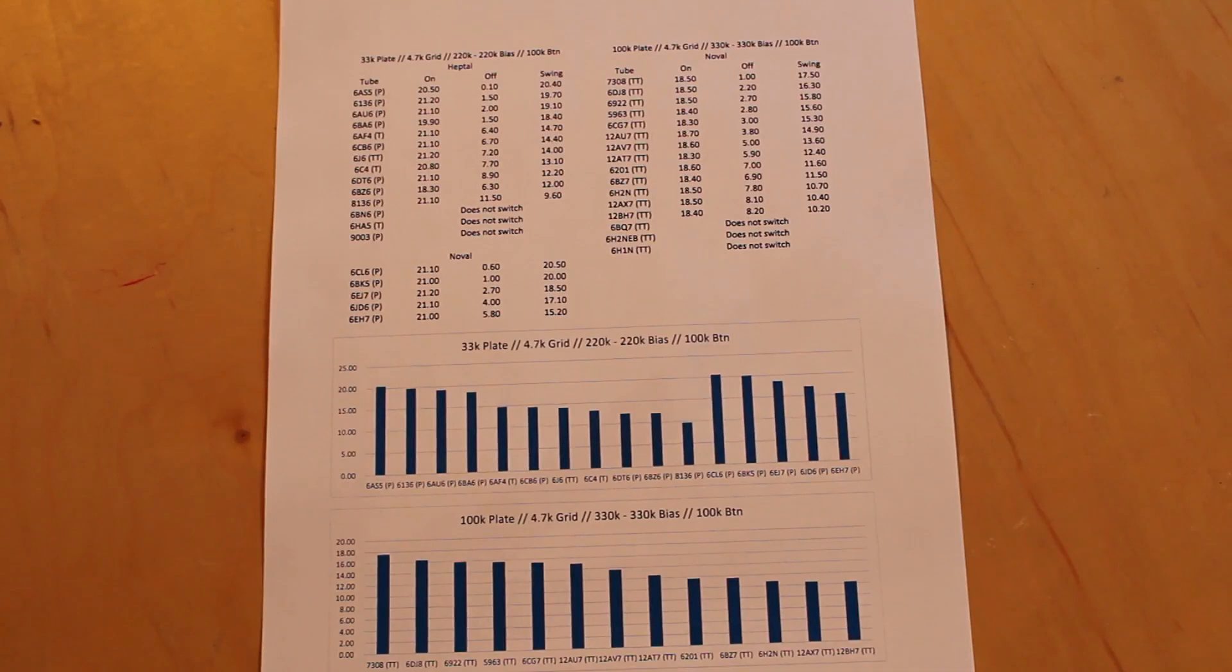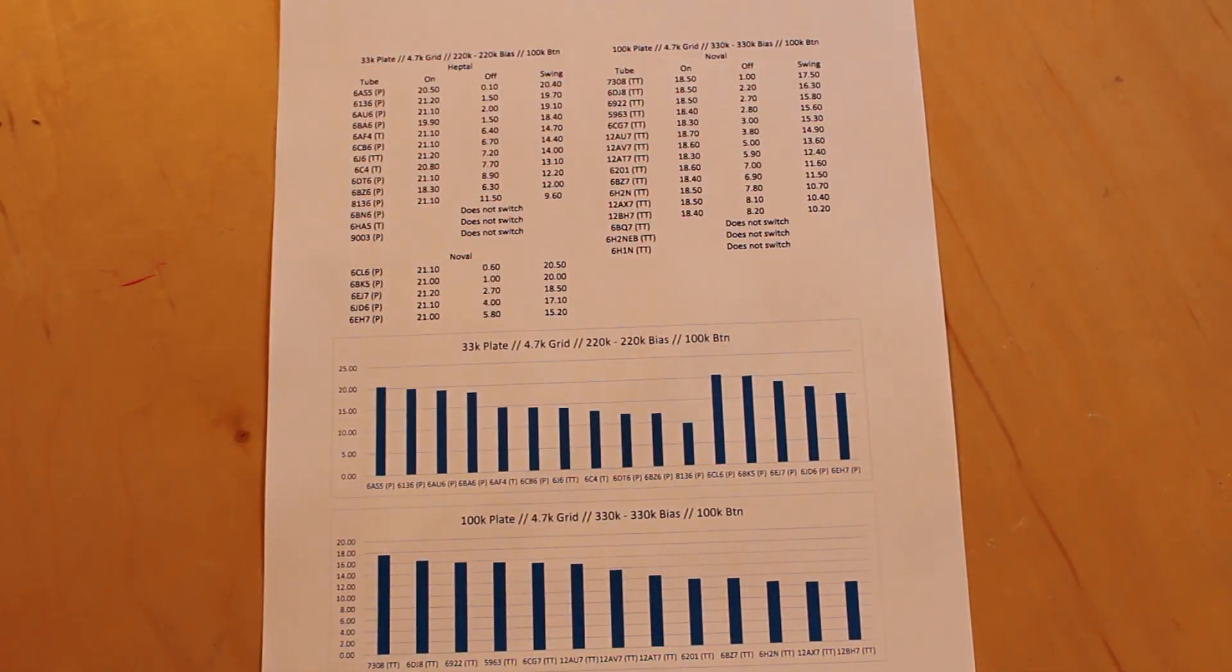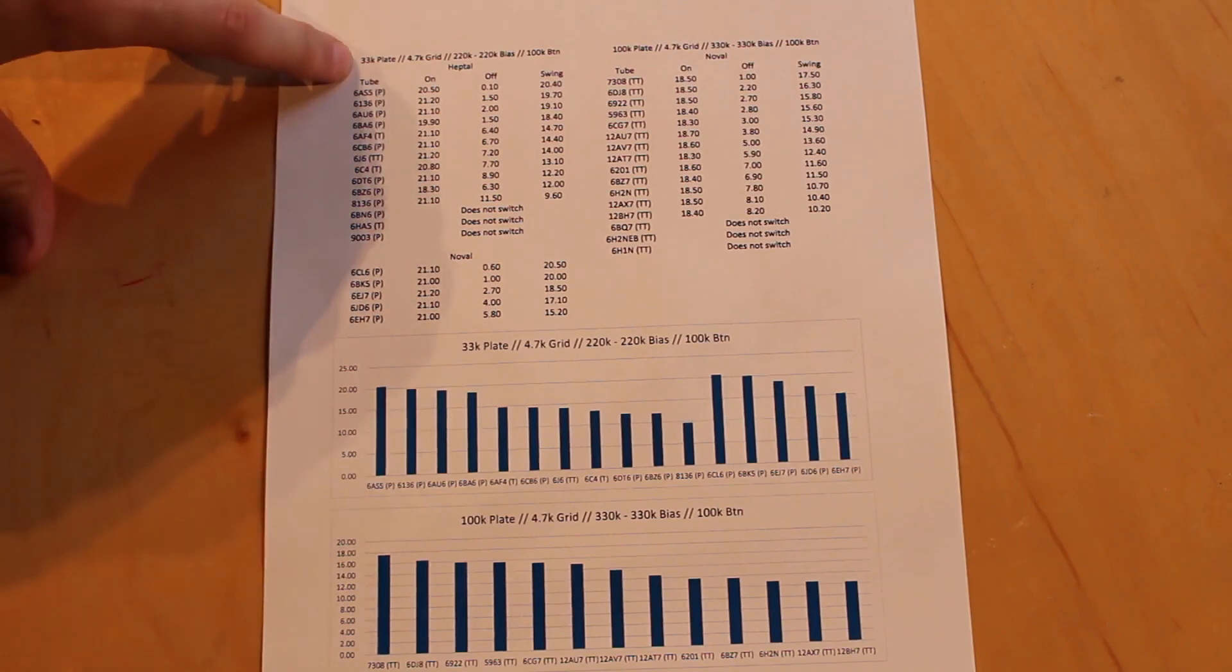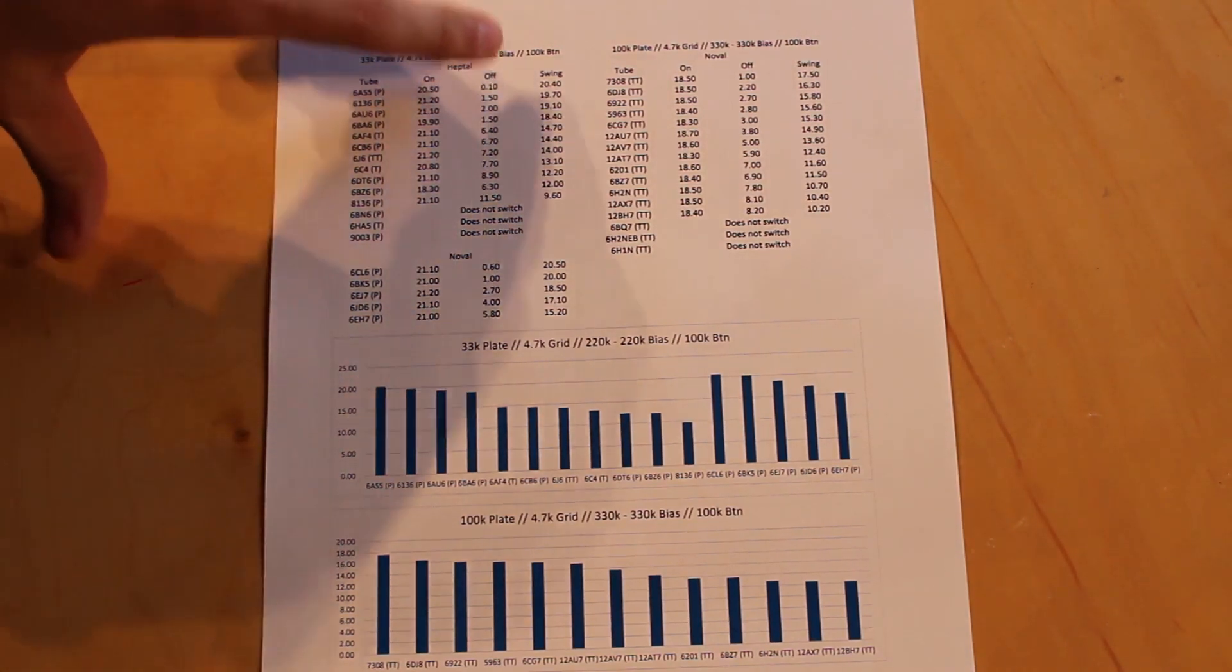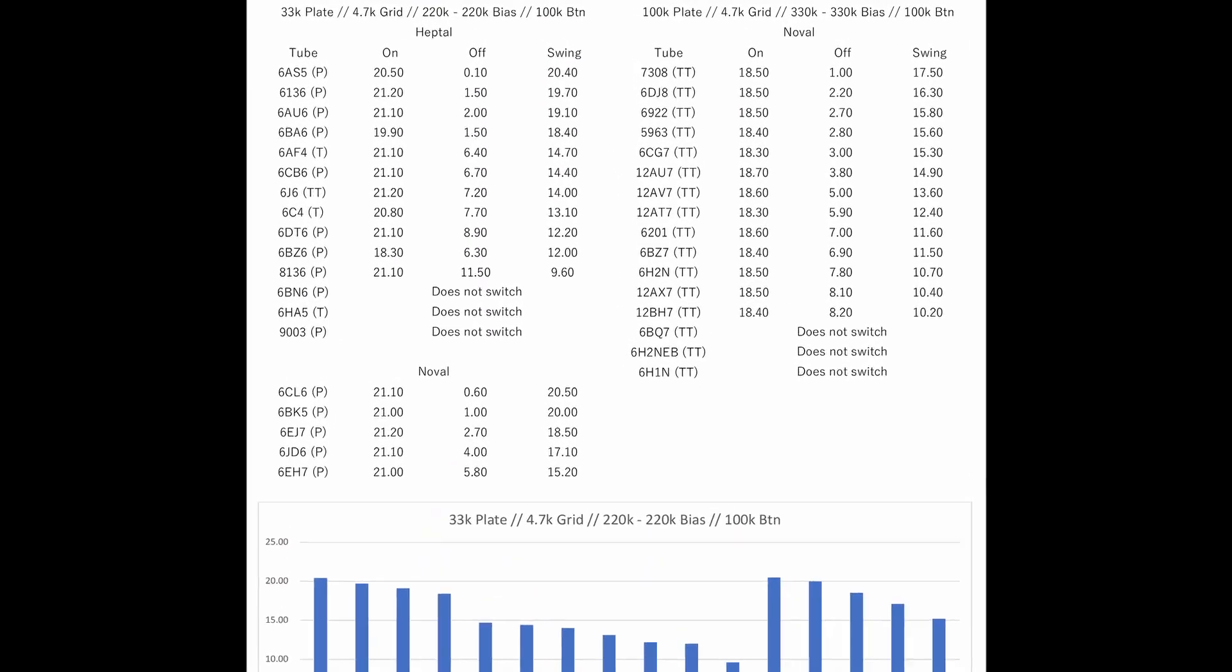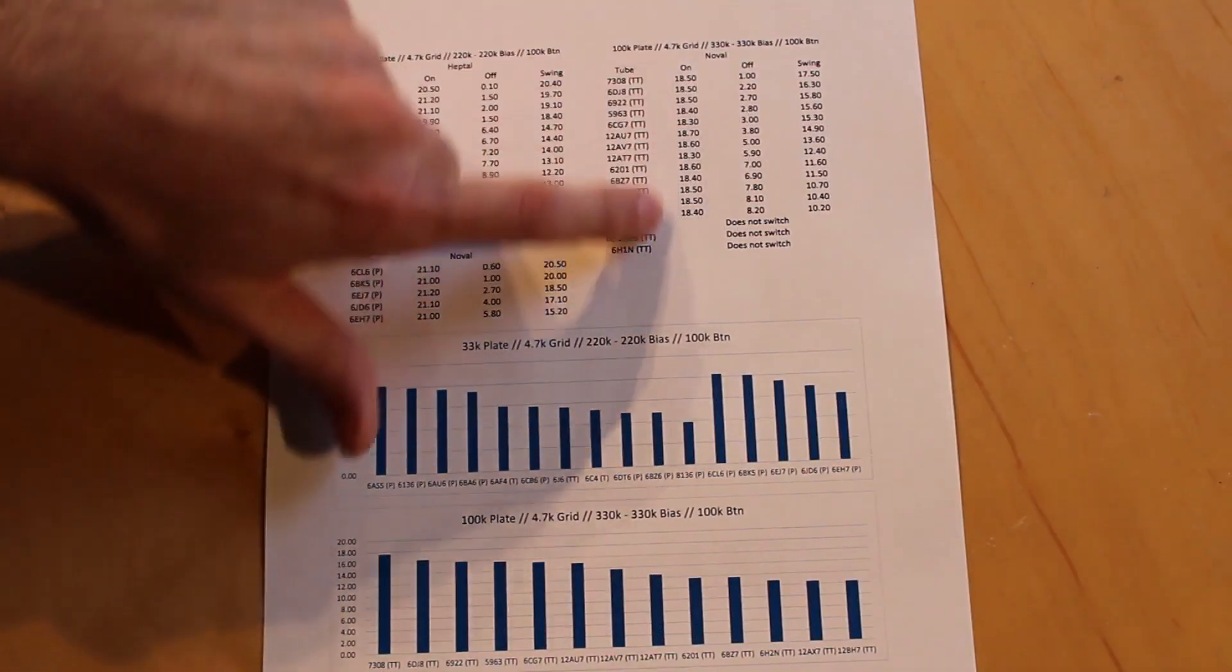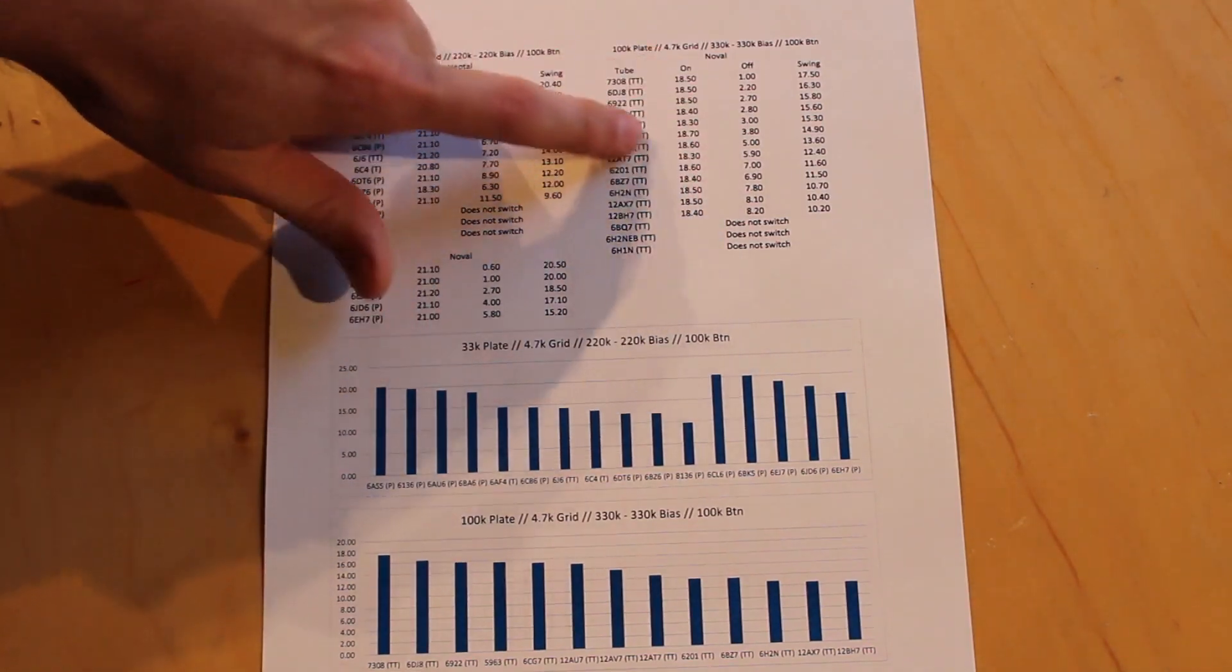All right, and here's the results. And there's some massive surprises in here. So first of all, the 9-pin dual triode tubes gave me a bit of problem. I couldn't get them to switch with a 33,000 ohm on the plate and 220, 220 for the bias. So instead, I bumped it up to 100,000 on the plate and 330, 330 for the bias. And I was able to get most of them to switch. But that meant that the maximum voltage when it's essentially on was essentially limited to 18 and a half volts. And I think this is because we were just running such a massive plate resistor. But I was able to get most of them to switch and they did relatively well.